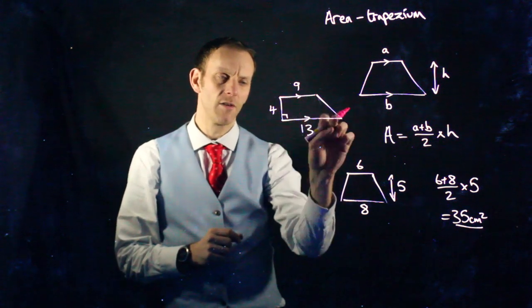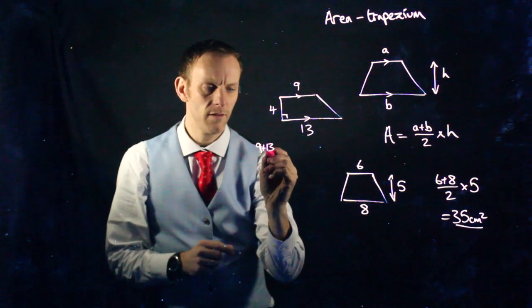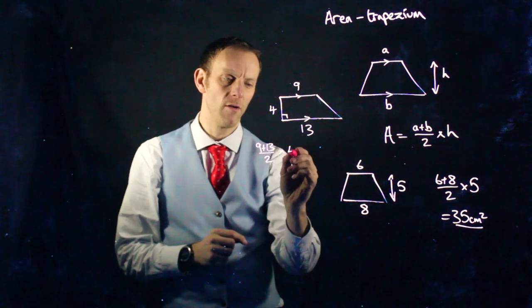We know it's the height because it makes a 90-degree angle with the base. So we would have 9 plus 13 divided by 2, A plus B divided by 2, and then multiply by our height, 4.